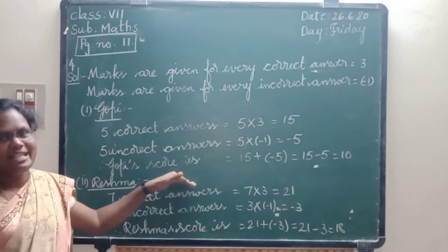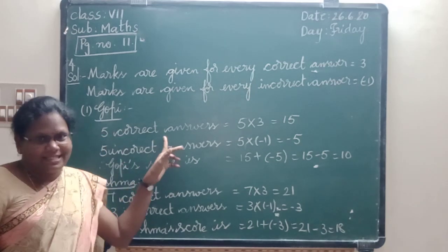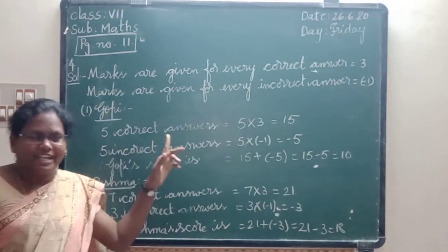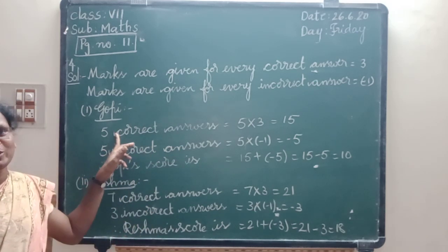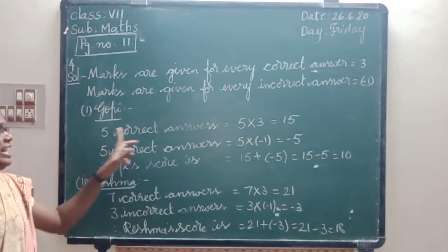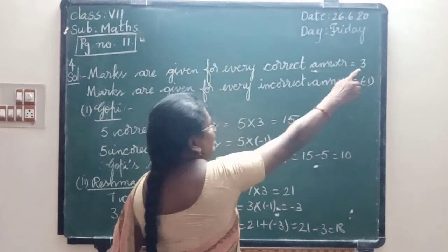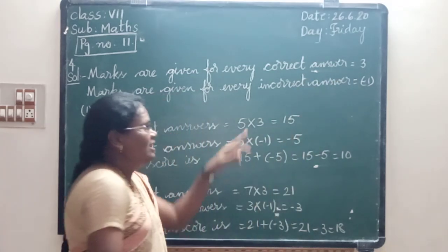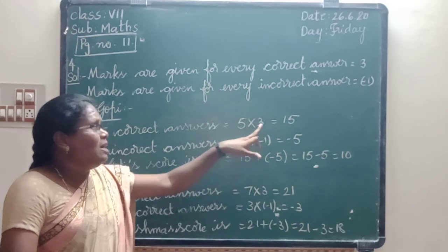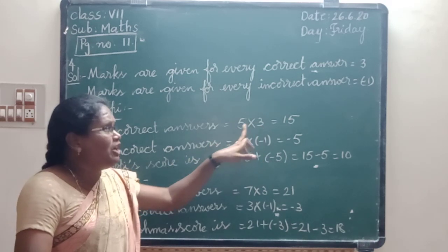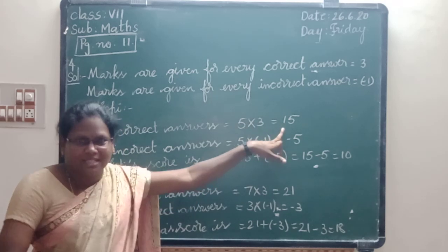First, I am explaining these. Listen carefully. First, Gopi. Gopi got 5 correct answers and 5 incorrect answers. We have to find the correct answers score. 5 correct answers: 5 into 3. Marks are given for every correct answer: 3 marks. So 5 into 3 — 5 threes are 15 marks.